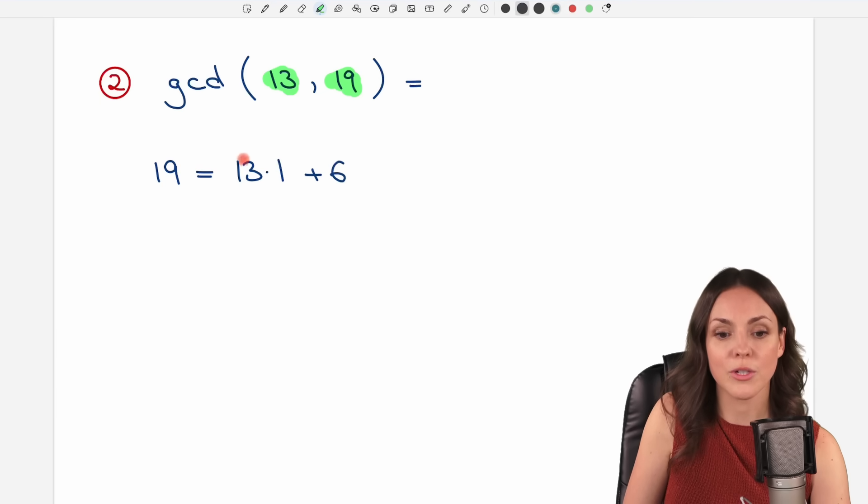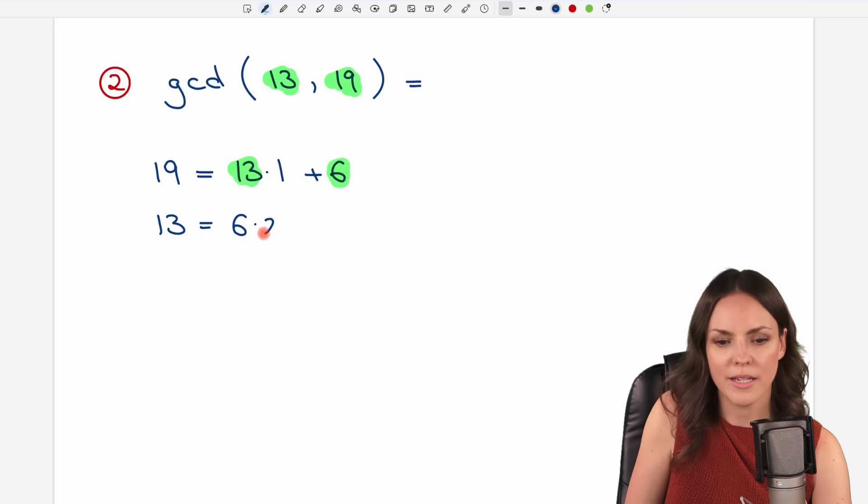Then we have new numbers. The 13 here and our new remainder, the 6. We do the same thing. We take the 13. And how often does the 6 go into the 13? This time it is 2 times because 2 times 6 equals 12. And how many steps do we have to go to get to the 13? It's just one more step.